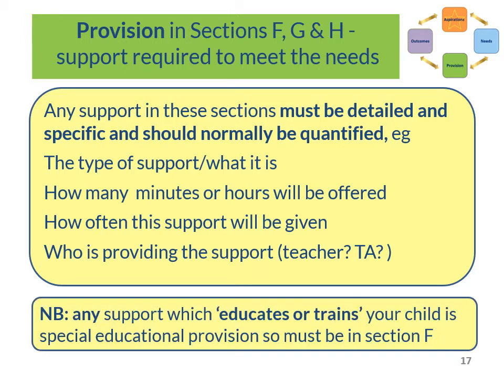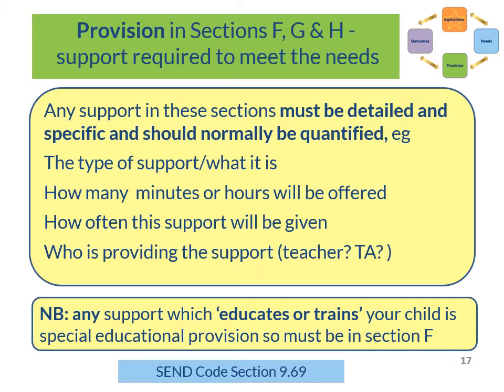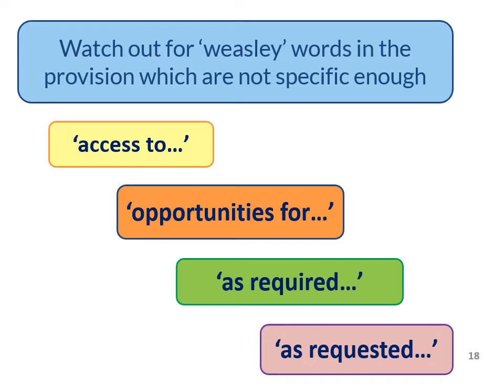It's important to understand that any support which educates or trains your child is regarded as special educational provision and must be in Section F. Speech and language therapy support will always be in Section F, but this section could also include occupational therapy, for example, which trains your child to do something. Watch out for 'weaselly words' in the provision sections like 'access to', 'opportunities for' or 'as required', which are not clear and specific enough.